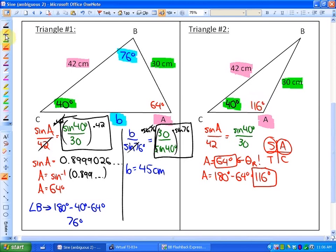So this is 116 degrees, and now we can solve the rest pretty quickly. Angle B is going to be 180 minus 40 minus 116, and that's going to be 24 degrees, which makes more sense.